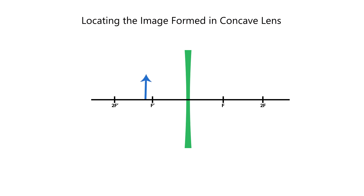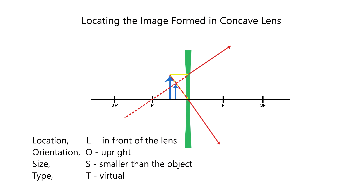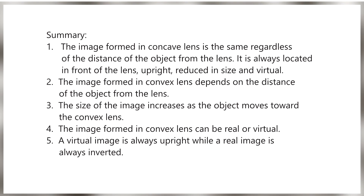Then we place the object between F prime and the lens. The image is located in front of the lens, upright, smaller than the object, and virtual. We observe that the image formed in a concave lens is the same regardless of the distance of the object from the lens. But for convex lens, the descriptions of the image depend on the location of the object relative to the lens. The size of the image increases as the object moves toward the lens. The image formed in a convex lens can be real or virtual. A virtual image is always upright, while a real image is always inverted.